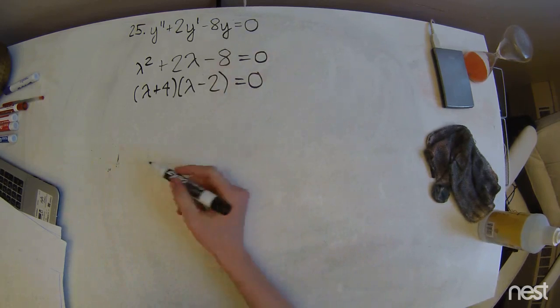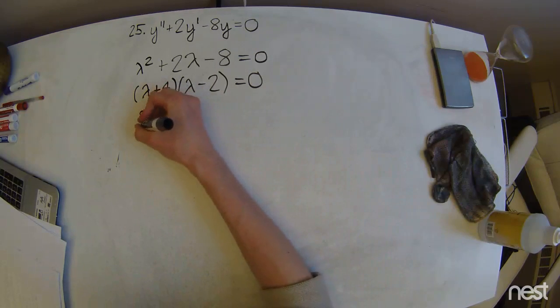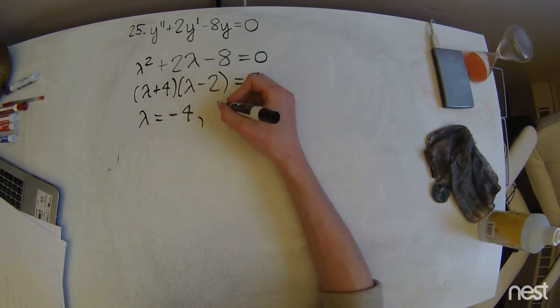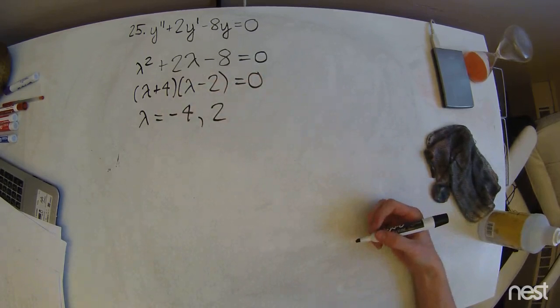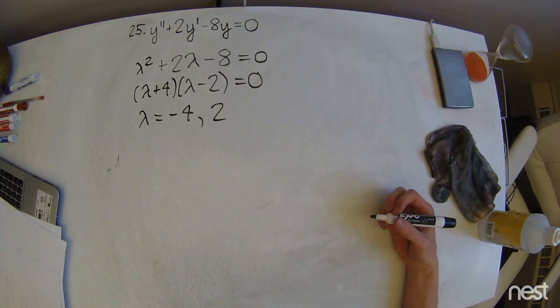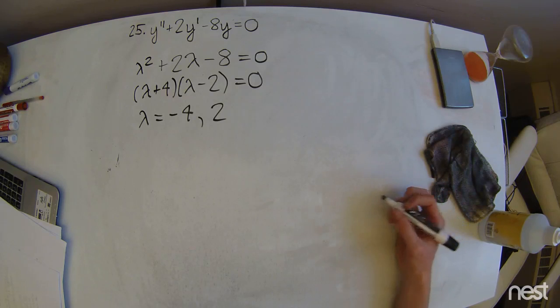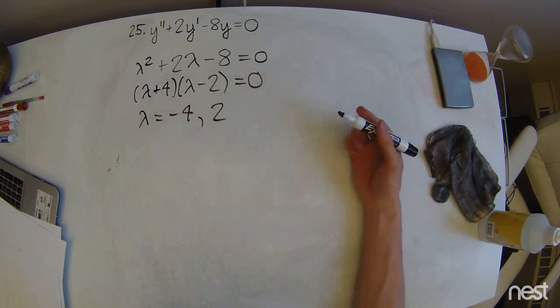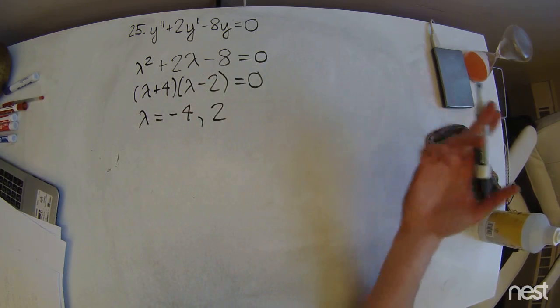And from this, we very clearly see that lambda can equal negative 4 or 2. So then, we're going to remember that our general form of the solution to this type of equation with real roots, not complex roots...